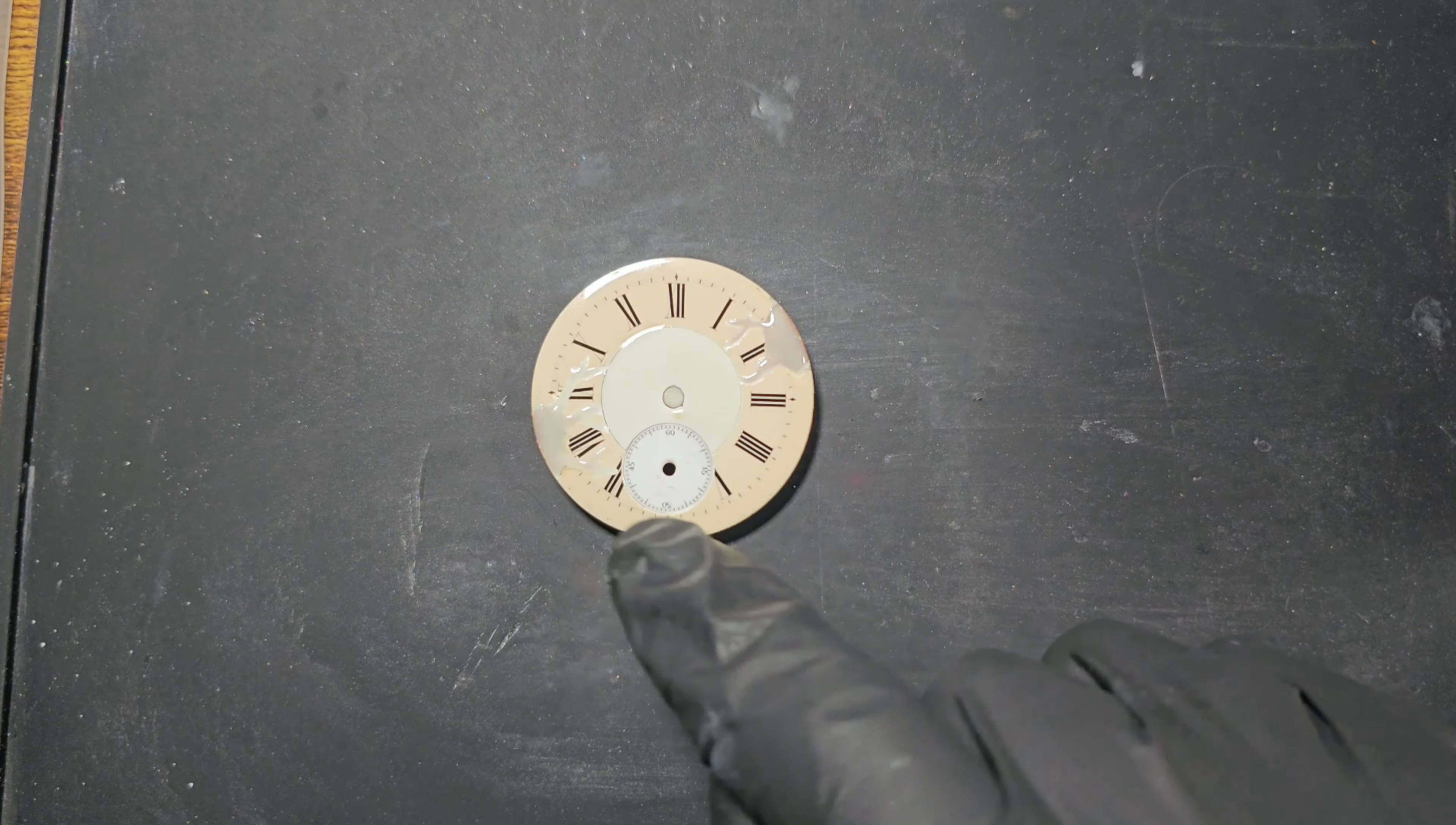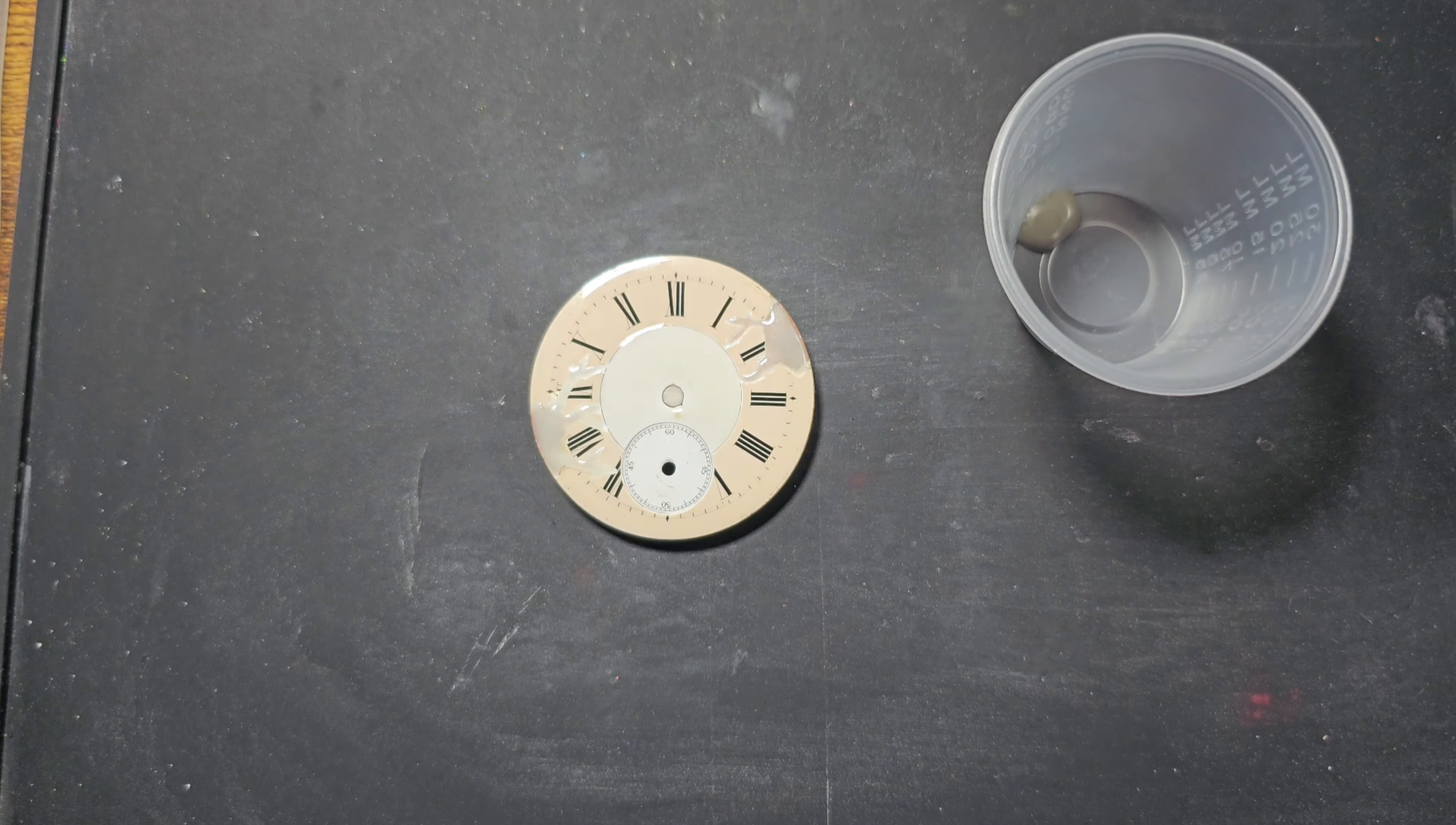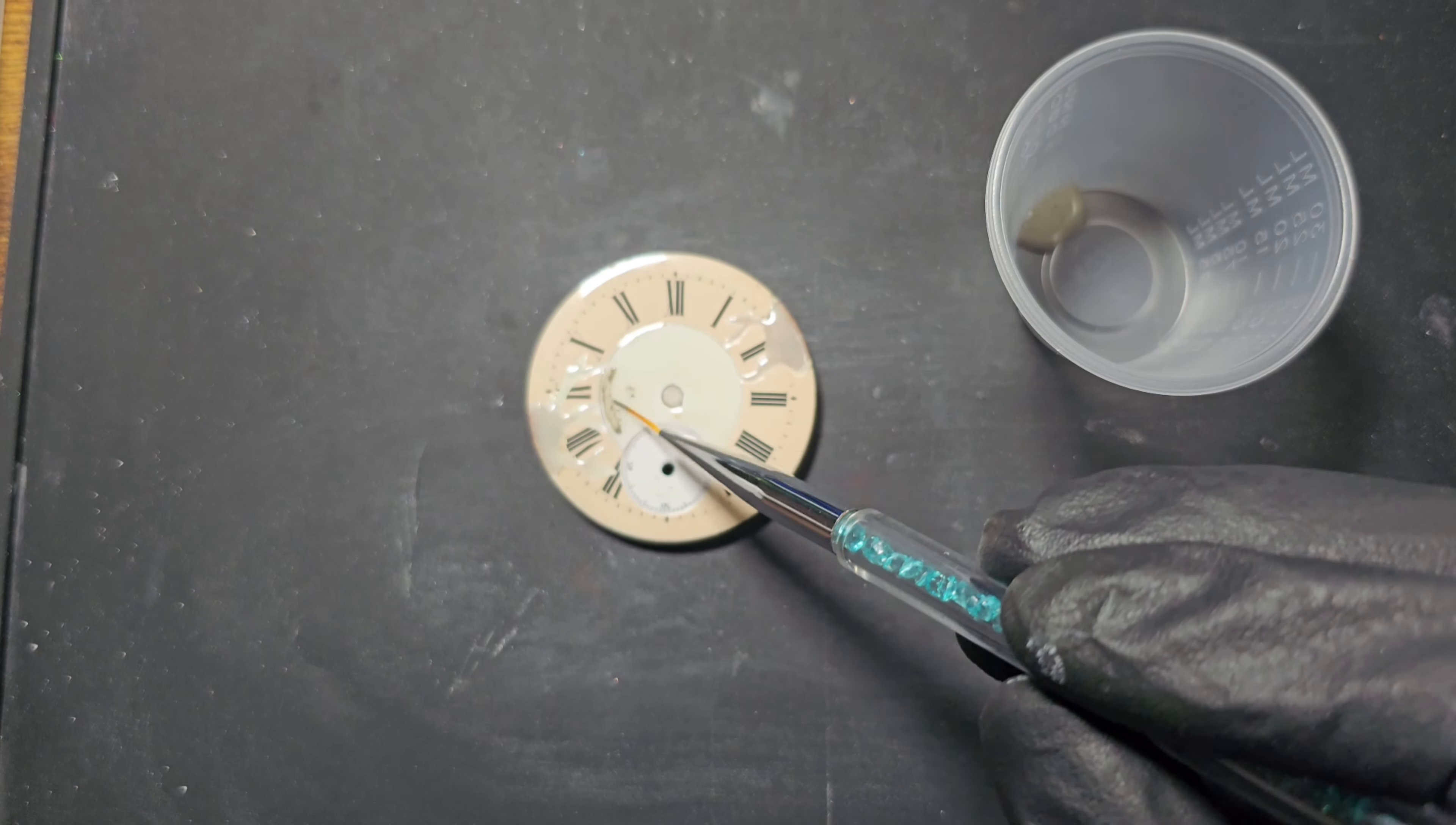So I'm going to be using the crackle paint from Green Stuff World. Pop some in my small mixing cup here. And I have to go really thin with this because I'm fully aware now that I'm running out of depth to play around with. And I'm just going to use a nail brush, really fine tip. And I'm just going to coat the whole inside of this area.